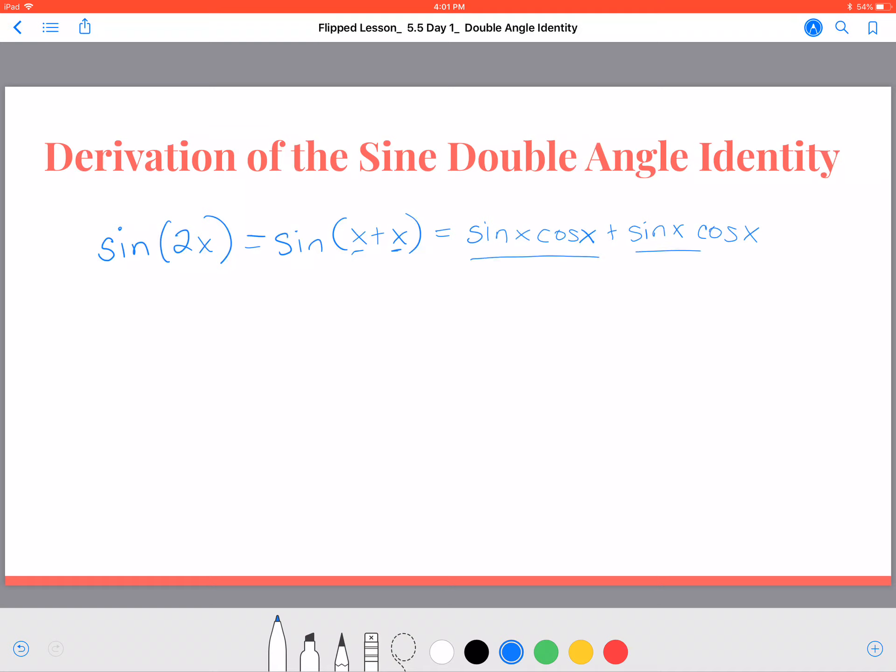Well, I have two of exactly the same terms, so I can simplify them into two of those. Two times the sine of x, cosine of x. And guess what? We have the double angle identity for sine. Pretty easy.